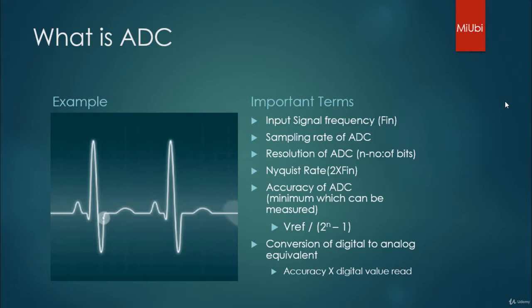The main important terms when you see about ADC are: what is the input signal frequency and what is the sampling rate of the ADC. Because if your input signal frequency is around 100 Hz and you sample at the same rate, you will not be able to reconstruct it properly.